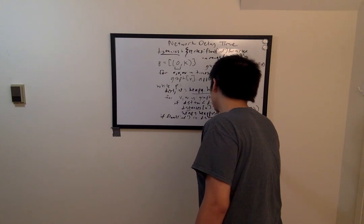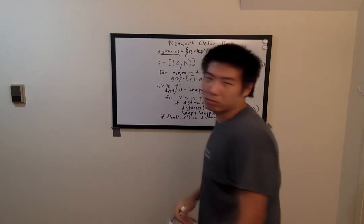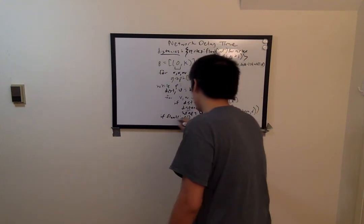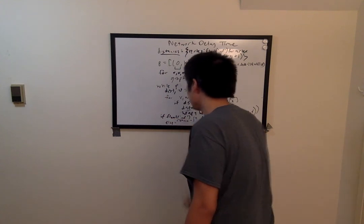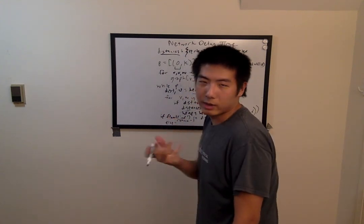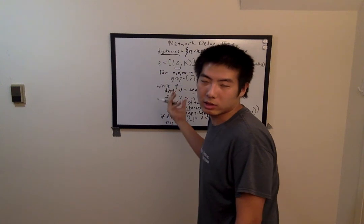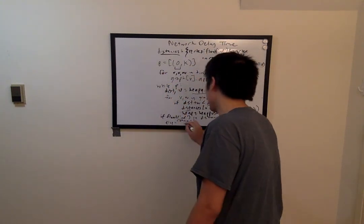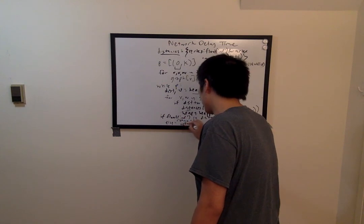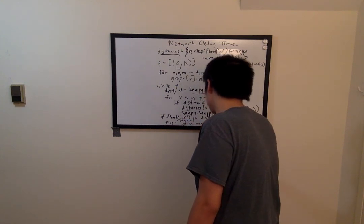we know that there are some vertices which are inaccessible by the current algorithm. Therefore, we can return minus 1. Else, we know that all vertices are accessible, and the network delay time, which is what the question is asking for, should be the maximum of all the shortest paths. Return max of distances dot values.